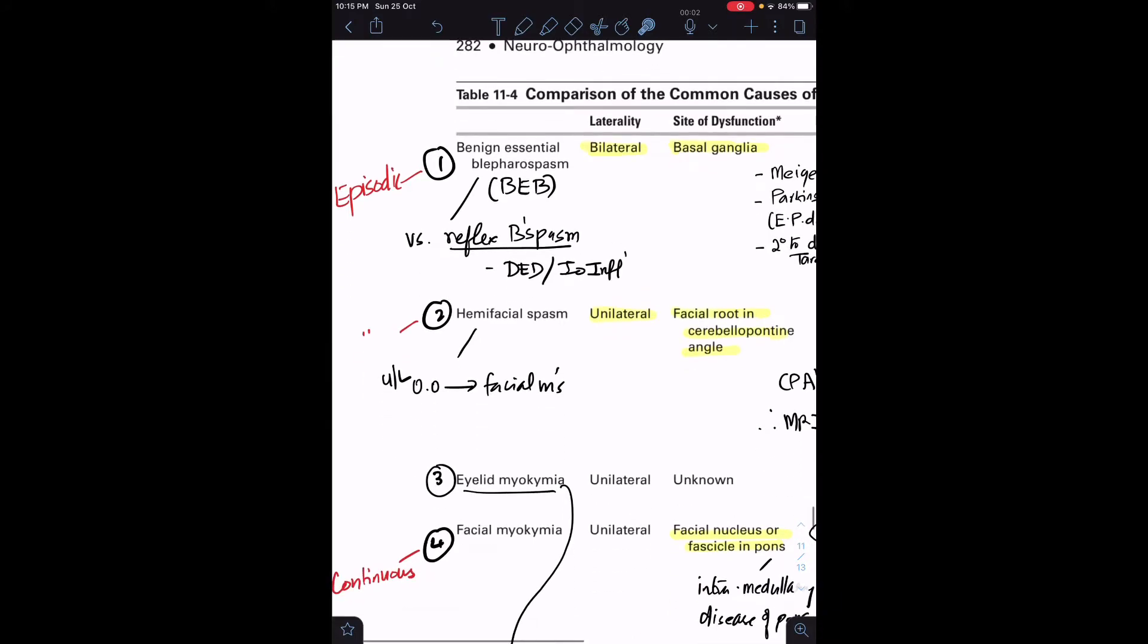The second is hemifacial spasm, which is very similar to benign essential blepharospasm but is unilateral. Amongst these conditions, only BEB is bilateral, the rest are unilateral. Hemifacial spasm is episodic contractions of facial muscles. First it starts with unilateral orbicularis oculi and can progress to other facial muscles. The important thing is the site of dysfunction or origin of lesion is in the cerebellopontine angle, where any tumor or blood vessel can compress the facial nerve.